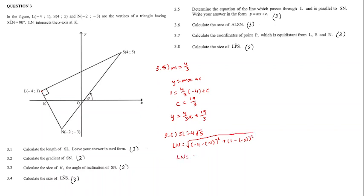We get LN to be equal to 2 root 5. We then can say our area of triangle LSN is equal to half times 4 root 5 times by 2 root 5. And we get our area to be equal to 20 units squared.